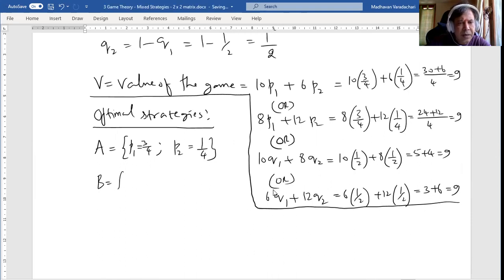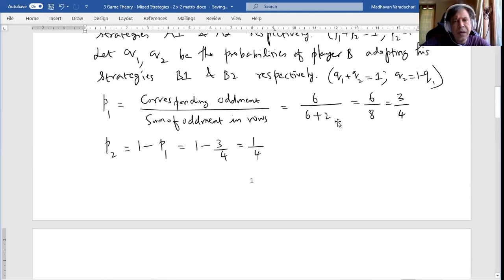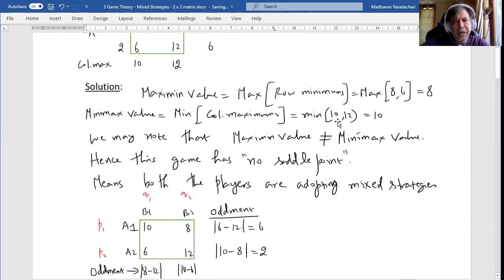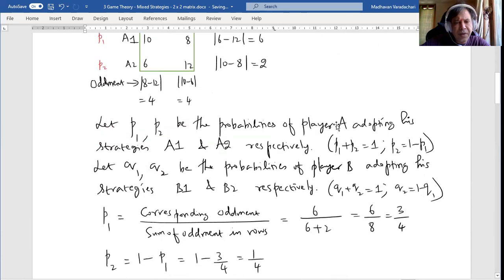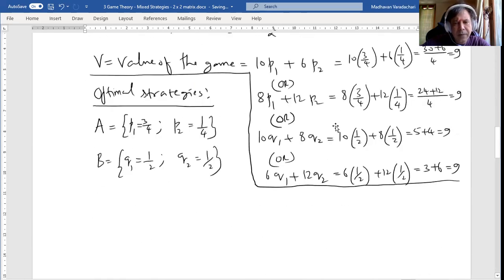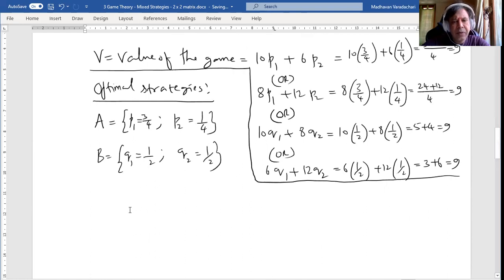Whereas B will adopt both strategies equally because both are 1 by 2 and 1 by 2. That is the solution for this. So when they ask you to solve it optimally or find the optimal solution, it means you are supposed to find the optimal strategies and also the value of the game.